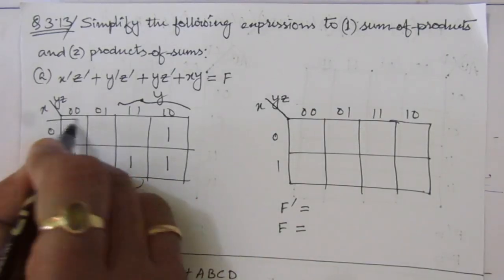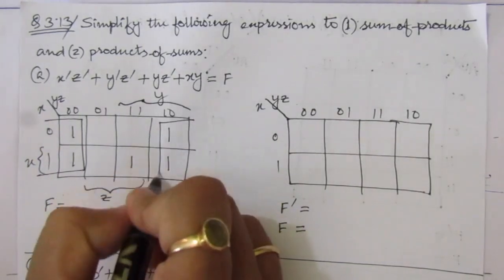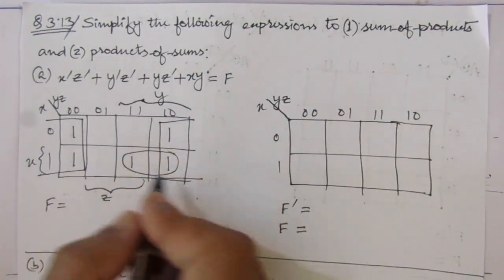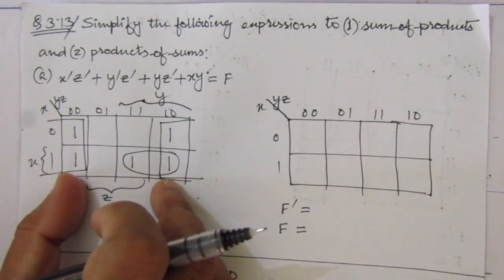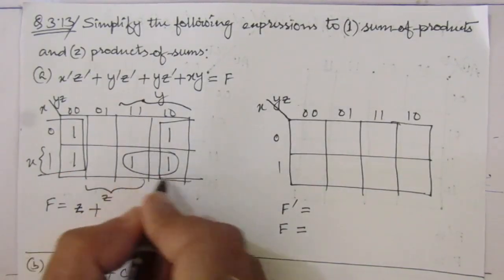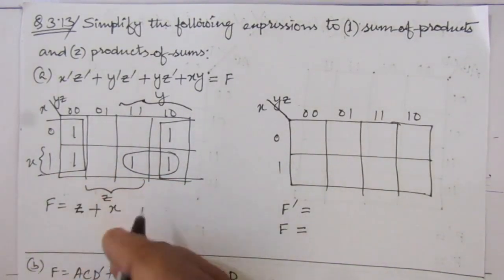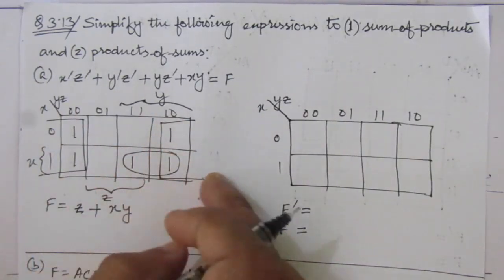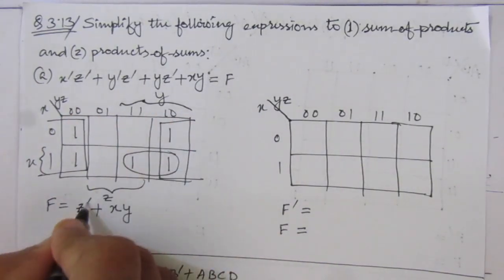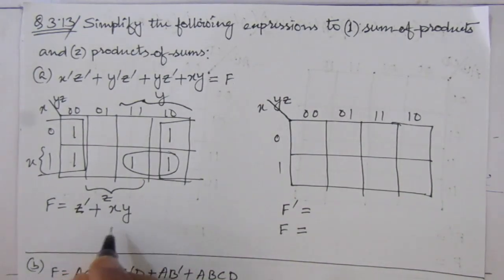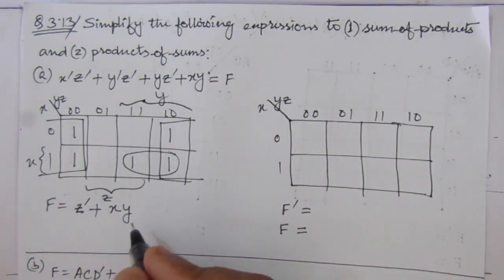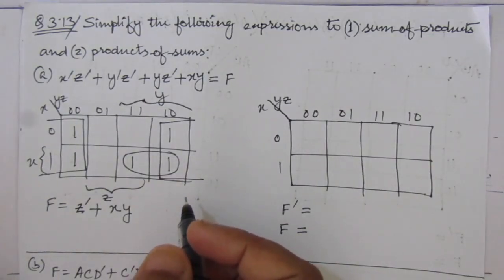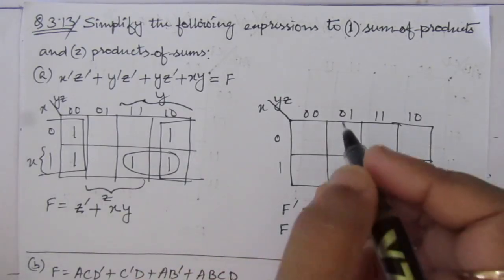From the K-map we can combine like this: this will be one term and this will be another term. From this combination x will be cancelled, so it will be z-bar. From this term we get x y z + x y, which simplifies. From this combination we get z-bar + x y, so the simplified sum of product expression is z-bar + x y. Now for finding the product of sums, we have to put the zero values in the table.